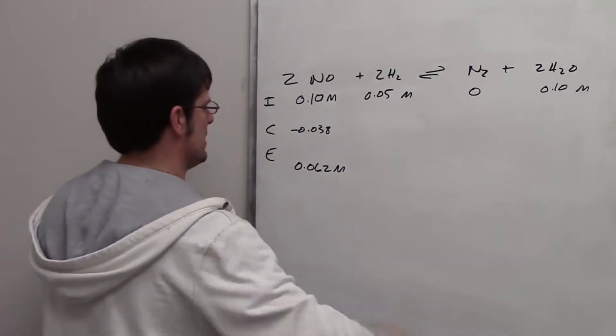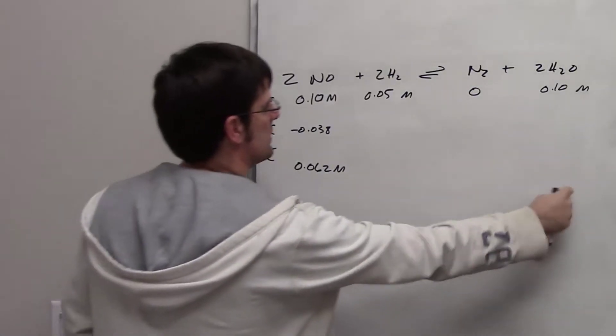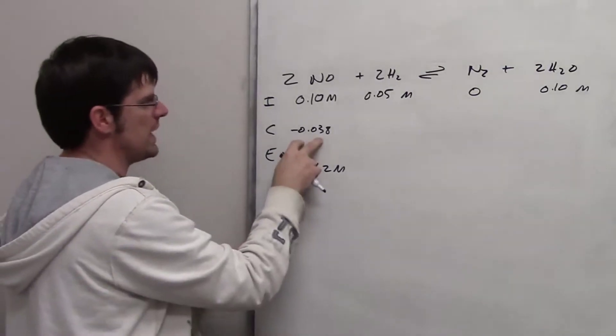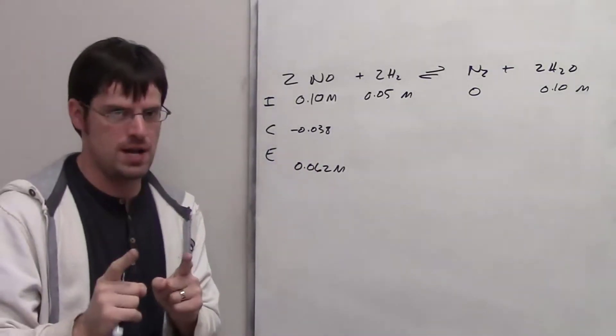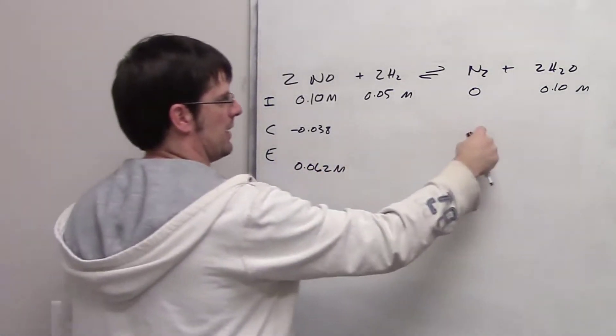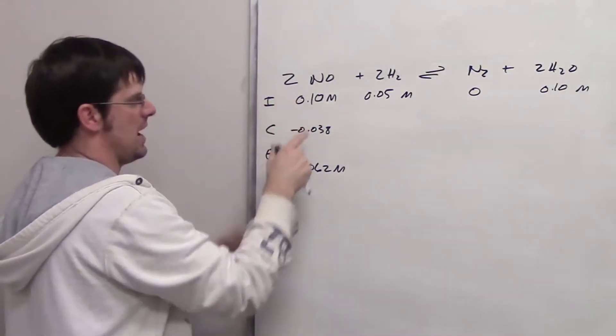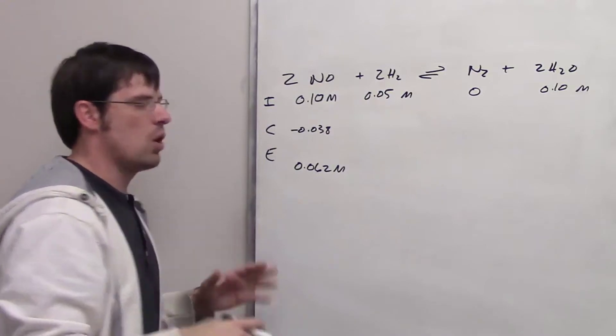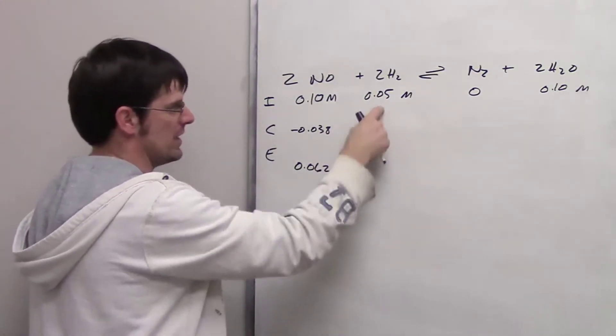It wants me to fill in the blanks for all of these substances as well. Once I have this change, I can now use the stoichiometry to fill in these blanks. Because I have two moles of NO, and I also have two moles of H2, the change in H2 has to be the same.